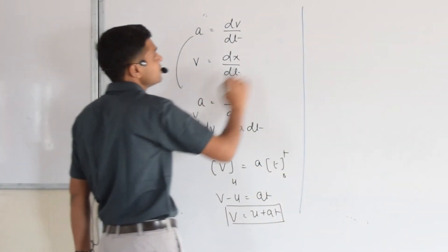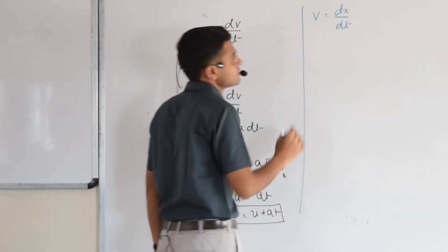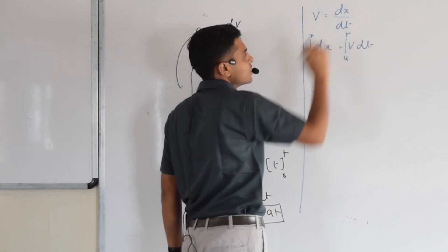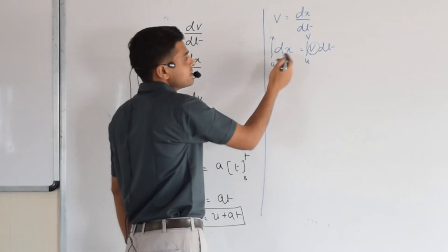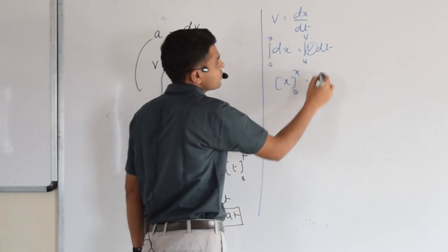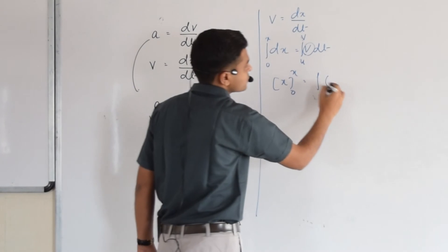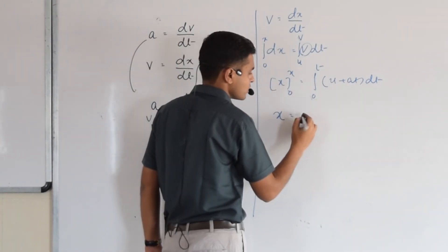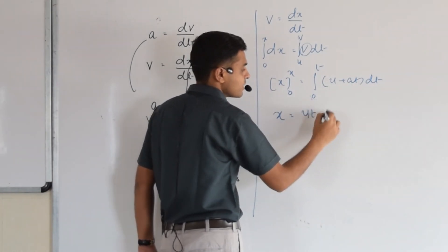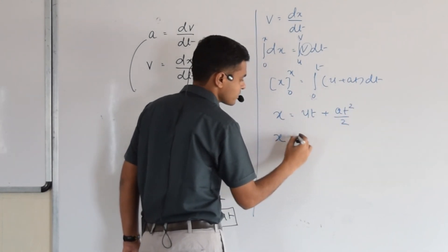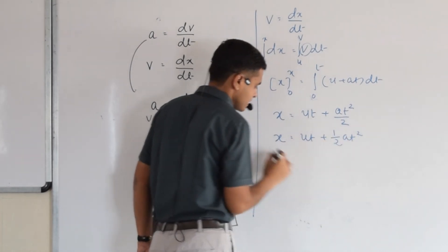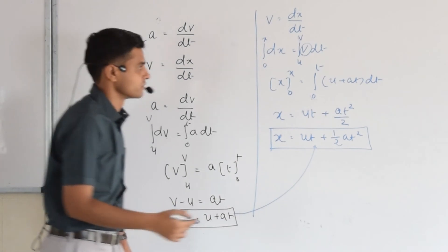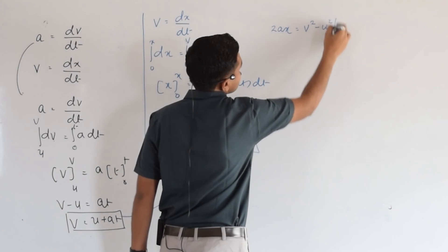Since V equals DX by DT, we have DX equals V DT. Integrating displacement from 0 to X and substituting V equals U plus AT with time from 0 to T, we get X equals UT plus half AT squared — the second equation. To find the third, we substitute T equals (V minus U) over A into this equation, which gives 2AX equals V squared minus U squared.